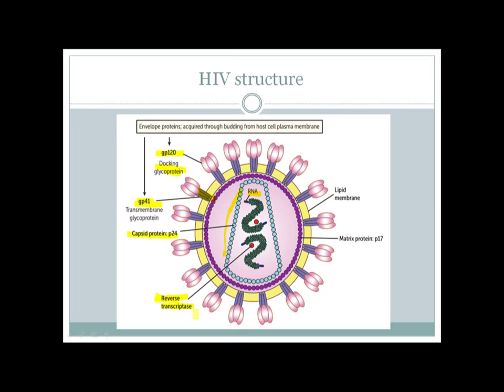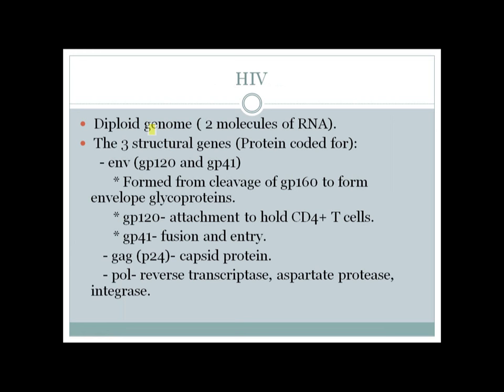HIV has a diploid genome with two molecules of RNA. There are three structural genes: env, gag, and pol. The env gene is very important — it gives rise to two glycoproteins, gp120 and gp41, which actually form from cleavage of gp160. gp120 helps attachment to the CD4 helper T cell, and gp41 helps fusion and entry.